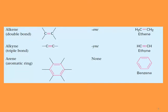Let's look at some examples. For alkenes, which have double bonds, all of these compounds end in '-ene'. They are classified as alkenes, such as ethene or ethylene, which has the structure CH₂=CH₂.